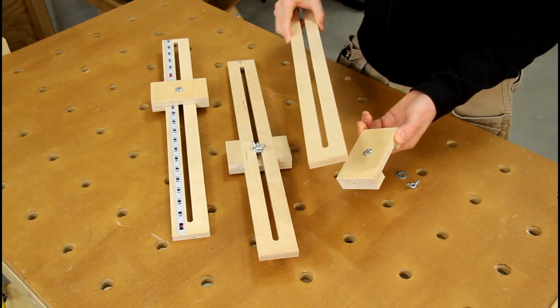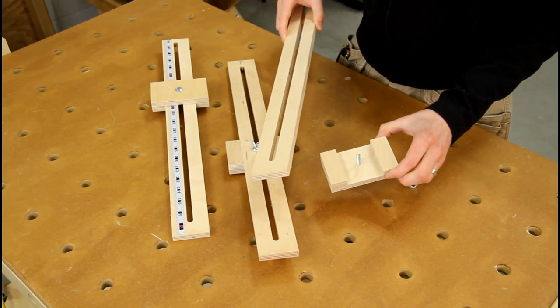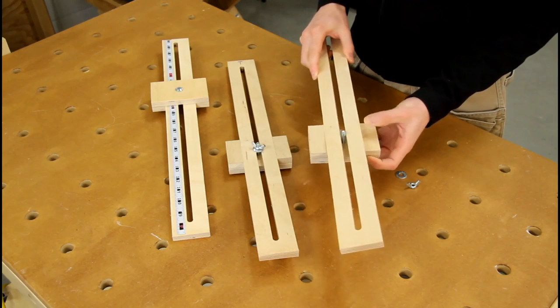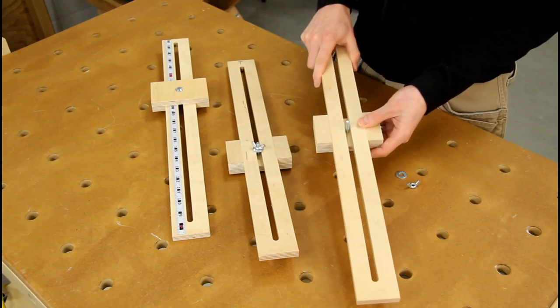The stop blocks are also made of half-inch Baltic birch, so there's the main plate of it, and then there's two cleats that are attached, and what they do is form a channel for the main bar to fit into, so that it can slide back and forth.